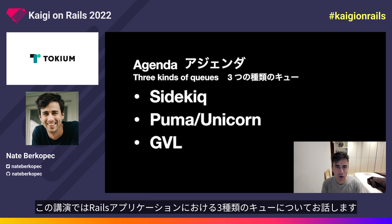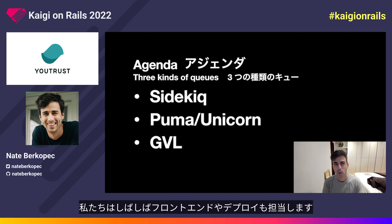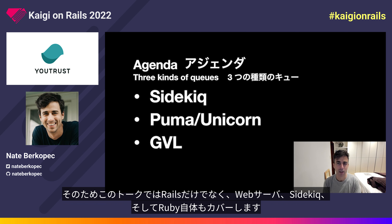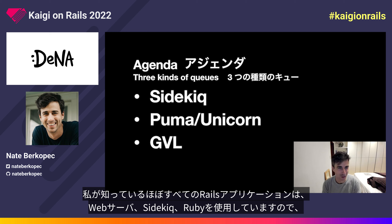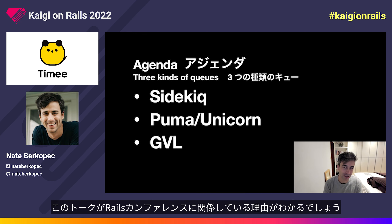In this talk, we're going to be covering three different types of queues in a Rails application. As Rails engineers, we're often responsible for the full stack of the app, including front-end and deployment. So this talk will cover not just Rails, but also web servers, Sidekiq, and Ruby itself. Almost every Rails application I've ever seen uses a web server, Sidekiq, and Ruby.